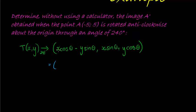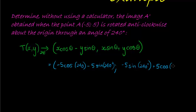Let's go ahead and substitute what we do have. We have now that x was negative 5, cos of 240, minus y was 5 sine of 240 degrees. That's the x part of the coordinate. For the y part, we have x negative 5, sine of 240 degrees, and plus y is 5, cos 240 degrees.